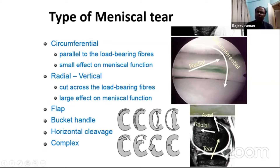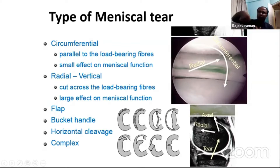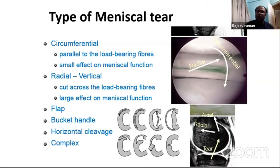A bucket handle tear is one of the most common types, where you have attachment at the proximal and distal part but the middle part is torn out — like a bucket handle, with the meniscus just hanging in the knee. Such type of meniscus tears are very painful, usually presenting with a painful knee and frequent locking episodes.